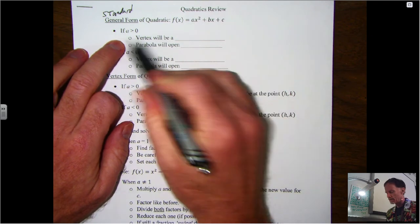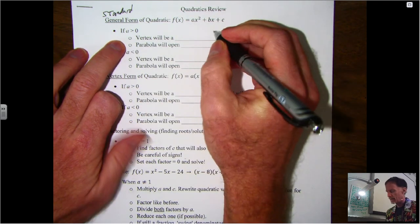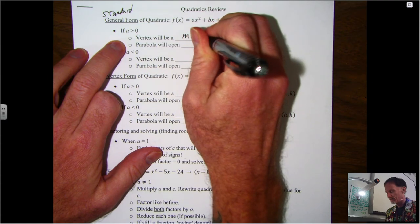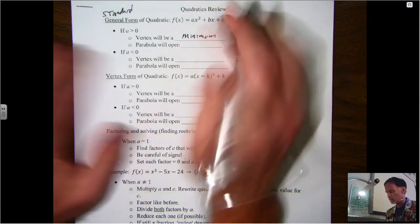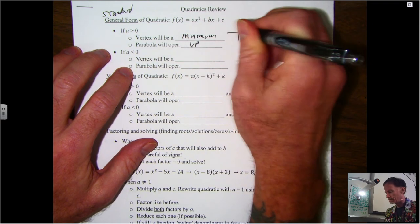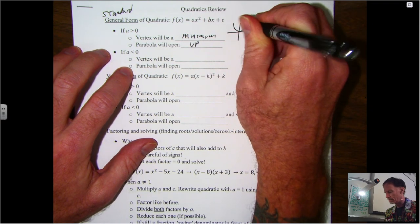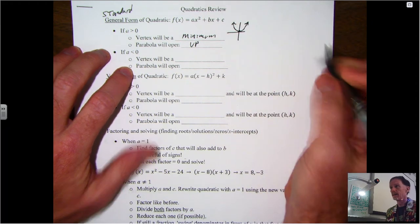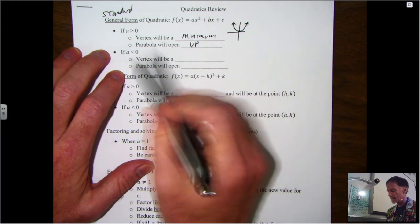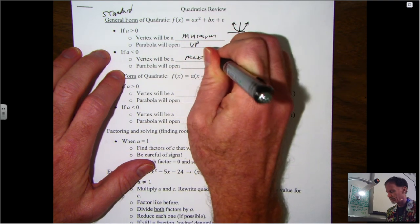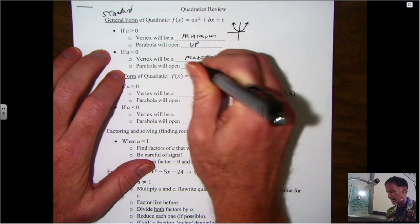The main thing property-wise is, remember, if that a value is positive, then the vertex is going to be a minimum value and the parabola is going to open up. So that's your situation where it looks like this, that's your parent function, where your vertex is there.